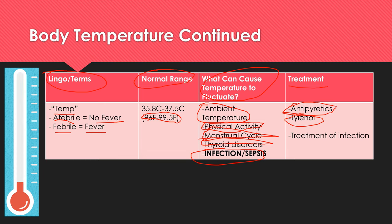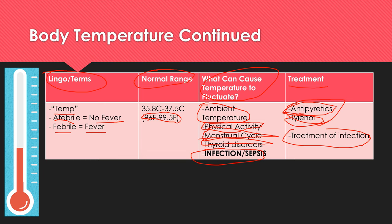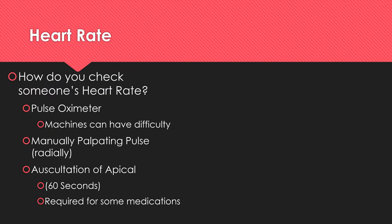Antipyretics are mostly treating the symptoms of something like an infection. For example, if someone has a UTI, that's going to cause a fever — antipyretics will treat the discomfort from the fever, but you need to treat the actual cause. If it's bacterial, you're going to want the patient on an antibiotic.